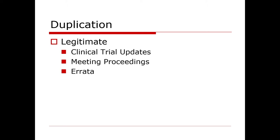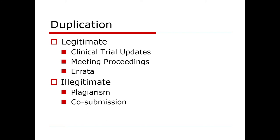Duplication can be legitimate. When there are clinical trial updates, such as when initial results of a study come out and then additional results come out later with further follow-up, there can be duplication there. This could happen in meeting proceedings, for example. In addition, oftentimes when errata are published, such as a table where one number is incorrect and it is corrected, the rest of the numbers in the table would be duplication, but this is a legitimate form of duplication. However, illegitimate duplication comes with plagiarism or co-submission.